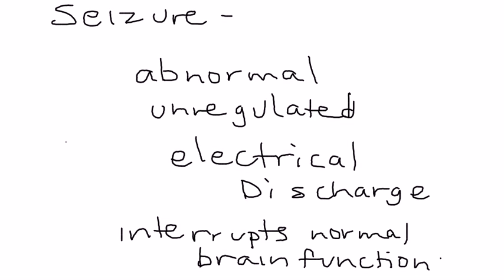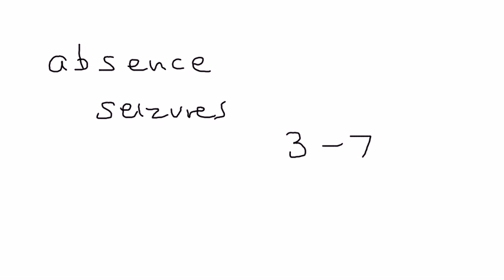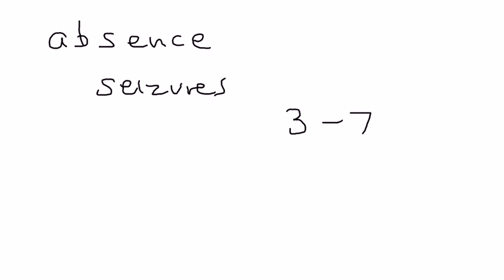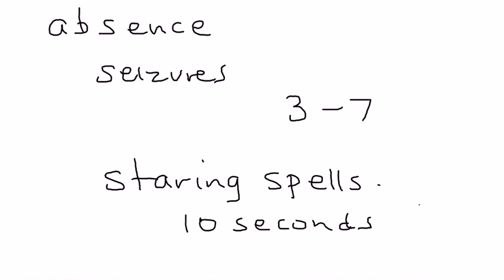Absence seizures are the second most common seizure type, especially in children, and are very common both in real life and on licensing exams. They occur usually between the ages of three and seven. The hallmark presentation is staring spells — the child briefly stares out into space for about 10 seconds, becomes unresponsive, and then returns to normal after the seizure is over.